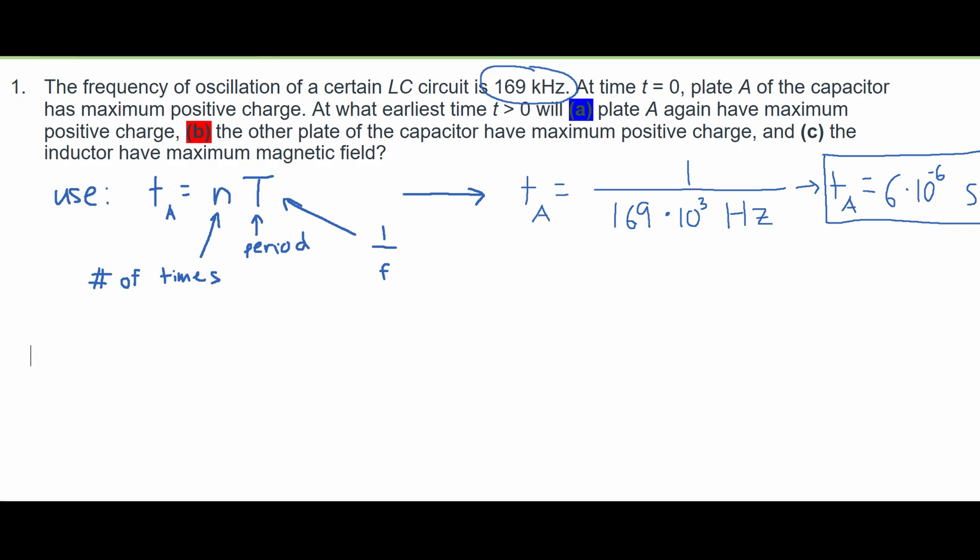For part B, we need to find out at what earliest time T greater than 0 will the other plate of the capacitor have maximum positive charge. For this, we are going to use this formula.